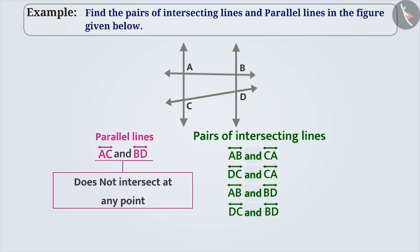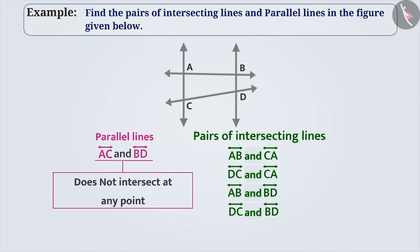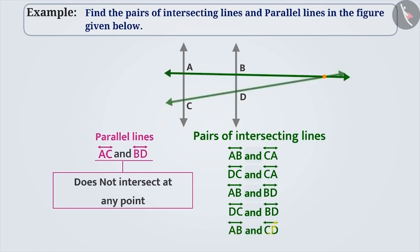Apart from these pairs of lines, there is another pair of intersecting lines in the given figure. Notice line AB and line CD. These lines in the figure may not intersect each other, but if extended, they will intersect at one point. As a result, we can say that line AB and line CD are also a pair of intersecting lines.